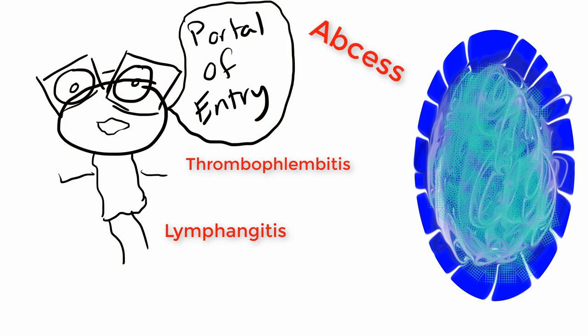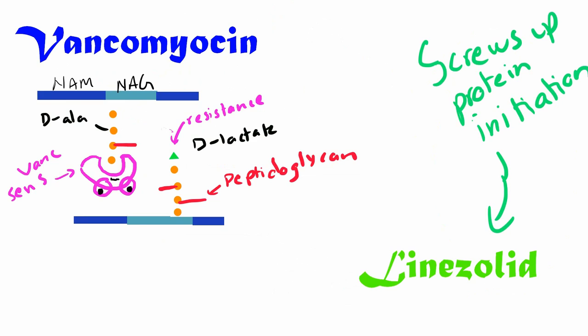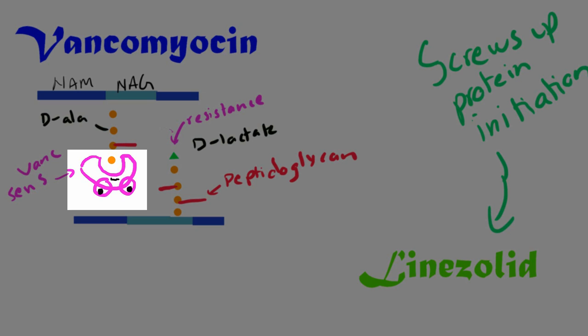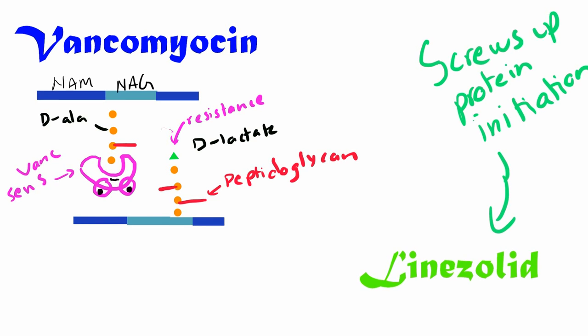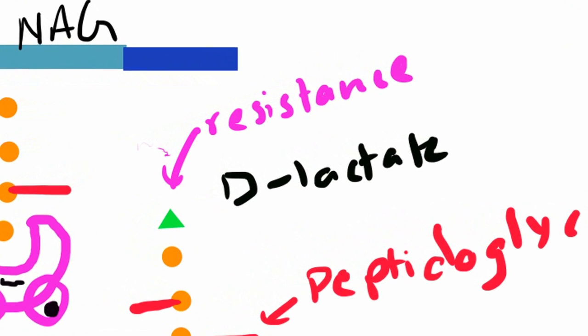Complications include thrombophlebitis, lymphangitis, and abscesses. In the case of dental procedures, you have to worry about Ludwig's angina, which is cellulitis in the submandibular space. If they are infected with MRSA, you're going to have to use vancomycin IV or linezolid, which can be given either IV or PO. Vancomycin works by capping the end of D-ala-D-ala to prevent cross-linking and stabilization between the peptidoglycan layer and the NAM-NAG. This messes up the structure of the whole cell wall.